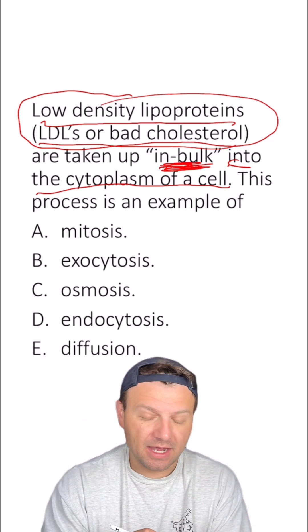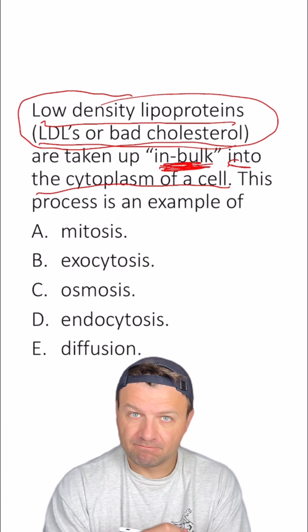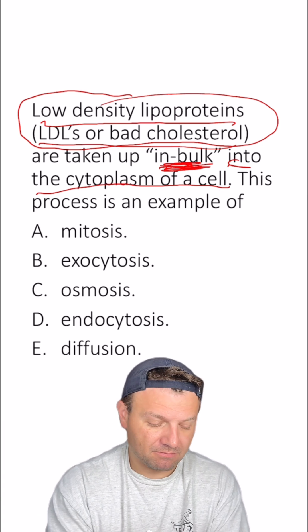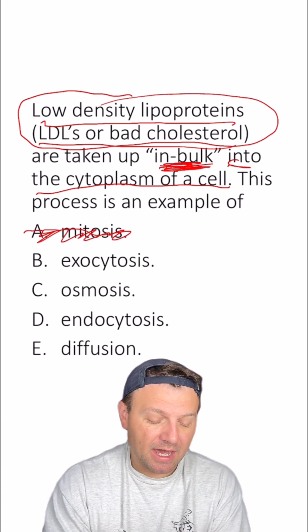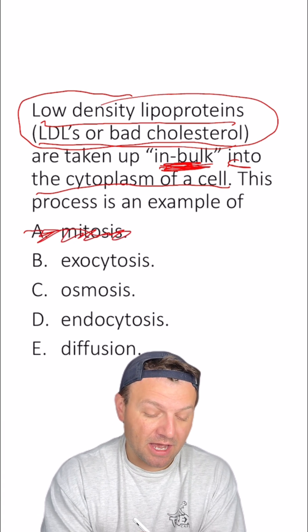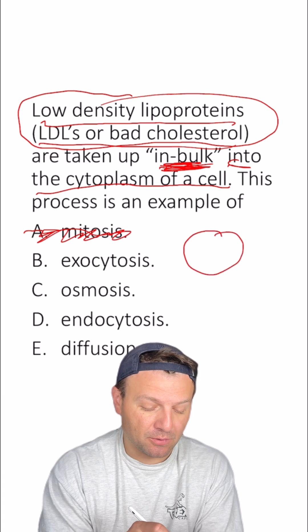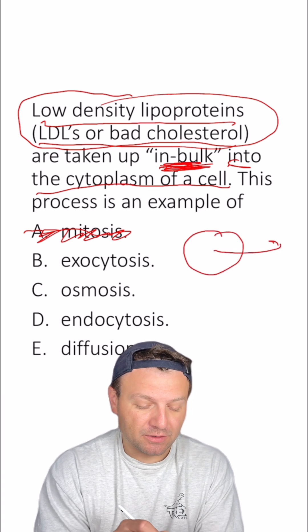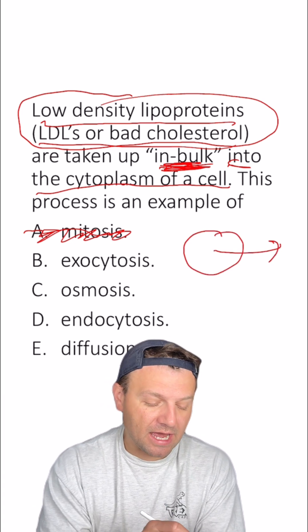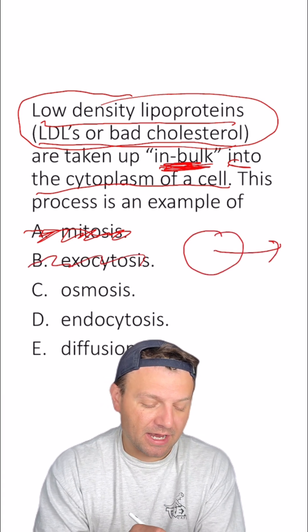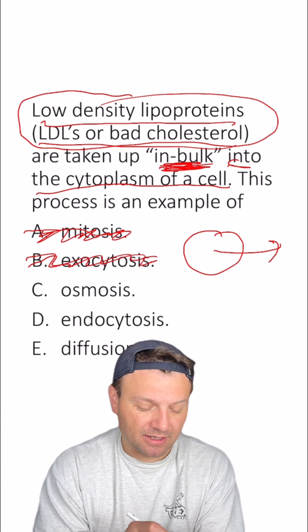Let's look at our answers. A — mitosis. That's cell division; that's not even a type of cell transport, so that's out. B — exocytosis. That is active transport, but that's when things move out of the cell, so that can't be the answer. Exo meaning exiting.